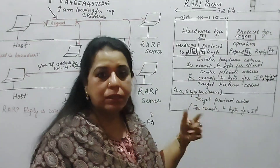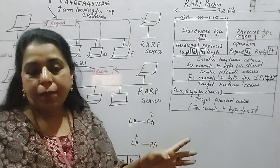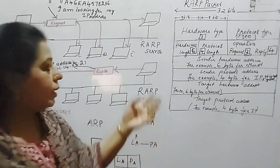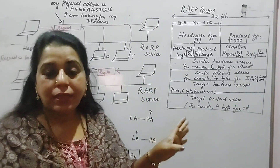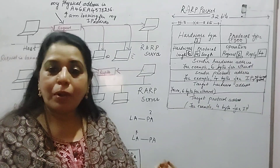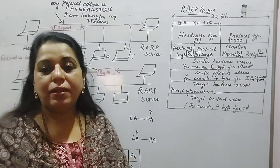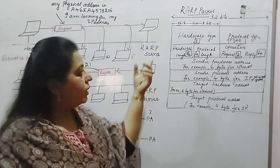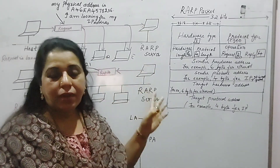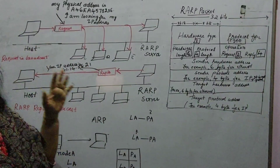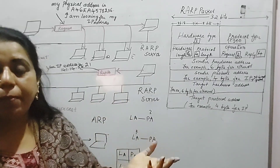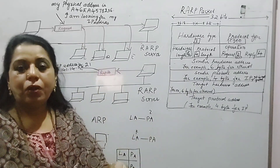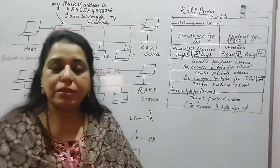The packet includes the sender's physical address and sender's logical address, but since the sender doesn't know its logical address, that field is left unfilled. It also includes the receiver's hardware address and receiver's protocol address. Since the machine doesn't know the logical address of the RARP server, it uses a broadcast address, so all machines in the network receive the request. The RARP server is the only one that responds. Once the host learns its logical address, it can include it in future IP packets when communicating with hosts in other networks.